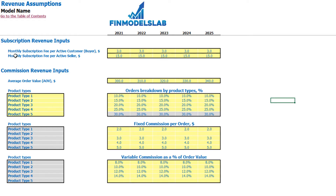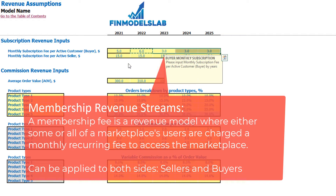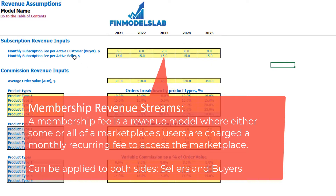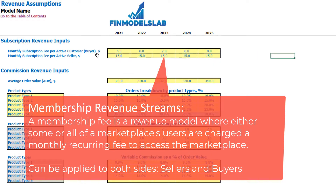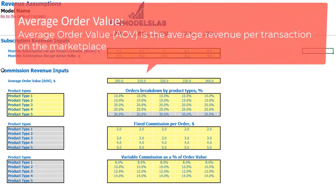The monthly subscription fee can be flat by years or growing — for example, $5 plus $1 each next year. The same idea applies for active sellers. By knowing the amount of active customers and active sellers by month, and the monthly subscription fee, we simply multiply one driver by another to get the subscription revenue by month. The next revenue stream is commission revenue inputs — we know how many orders we have each month.